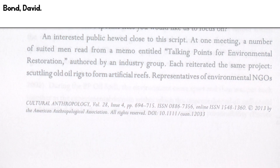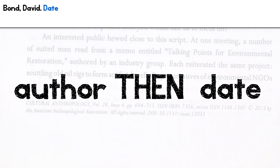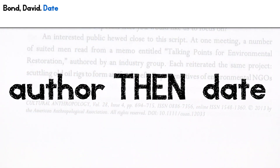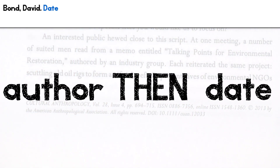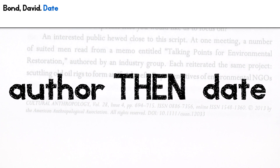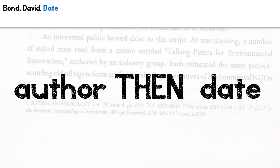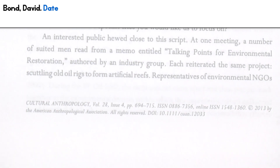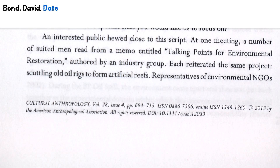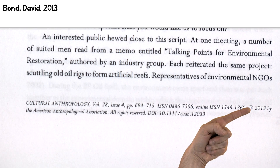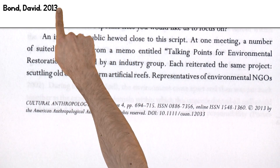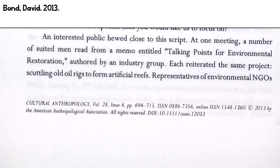In Chicago author-date, the date comes after the author — get it? Author-date! Author, then the four-digit year, then another period.